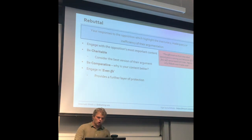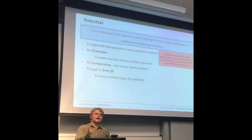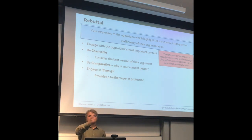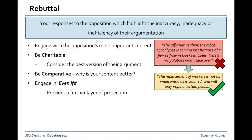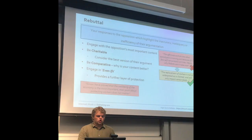An example: using the protecting workers debate, if your rebuttal is 'the affirmative thinks the robot apocalypse is coming from a few Coles kiosks — here's why robots won't take over' — that's not great rebuttal. It's not charitable and doesn't paint anyone in a good light. It's better to say the replacement of workers is not as widespread as claimed and will only impact certain fields, and go into more detailed, nuanced rebuttal.